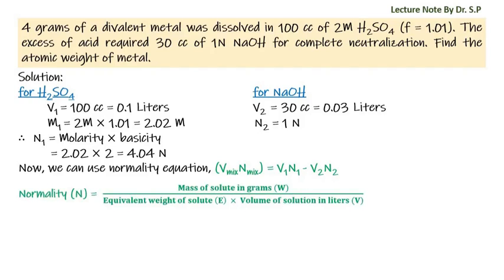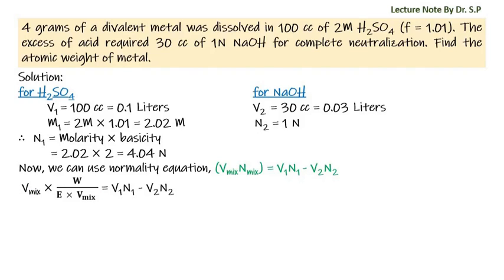For the metal, we use normality = (mass of solute in grams W) / (equivalent weight of solute E × volume in liters V). Hence we get: V_mixture × (W / E×V_mixture) = V1·N1 − V2·N2, where V1·N1 is for acid and V2·N2 is for base.